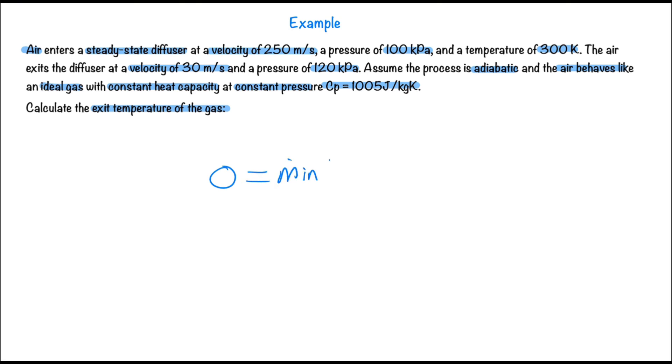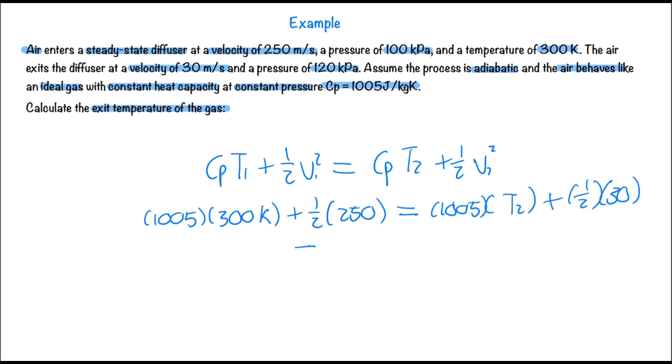Let's start by writing out our energy balance for diffusers. We can cancel out the mass since this is a steady state process. We know that we can calculate enthalpy with heat capacity and temperature and since we have constant heat capacity we don't have to integrate. Thus our energy balance becomes heat capacity times temperature in plus a half velocity squared equals heat capacity times temperature 2 plus a half velocity squared. We plug in our values and get a final temperature of 330.6 Kelvin.